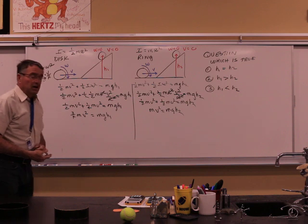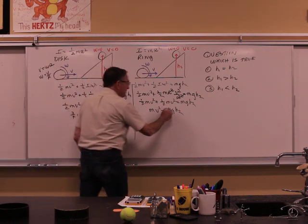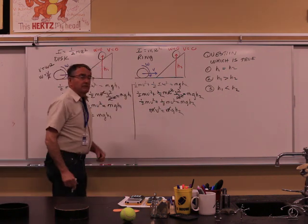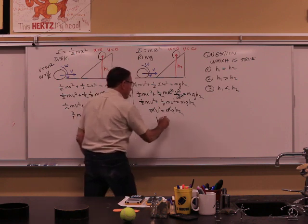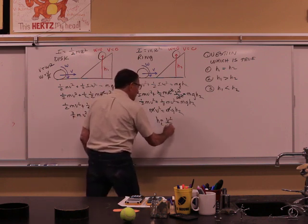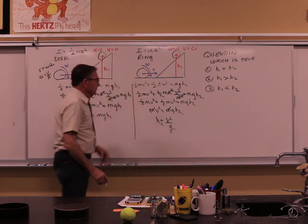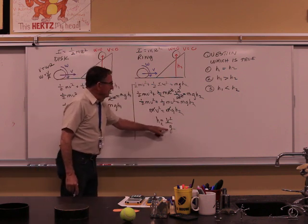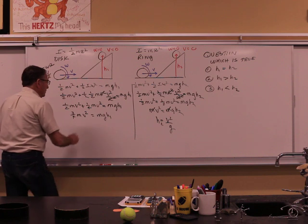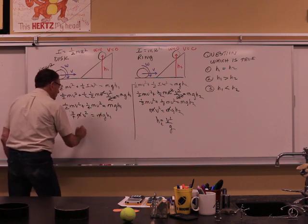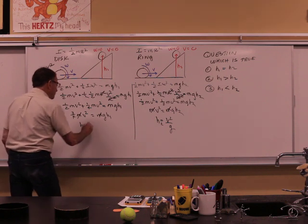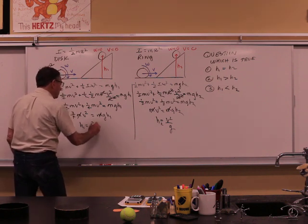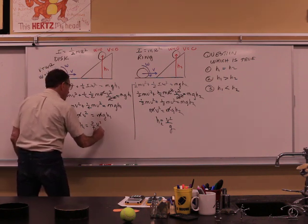There's our two equations. The mass here cancels. h2 on this one is going to be v squared over g. On this one we have the mass canceling. We have h1 is equaling to three-fourths v squared over g.